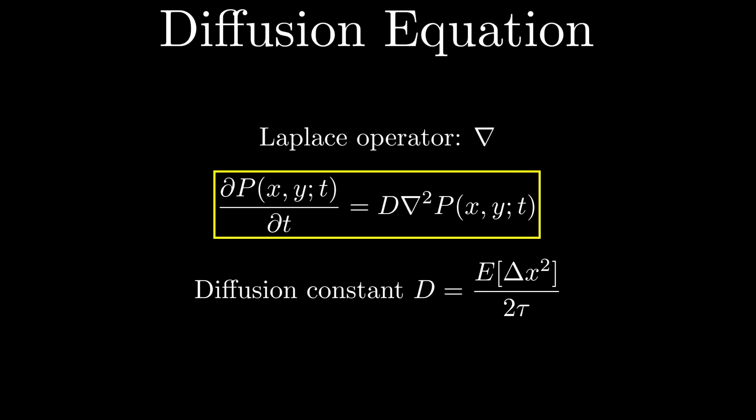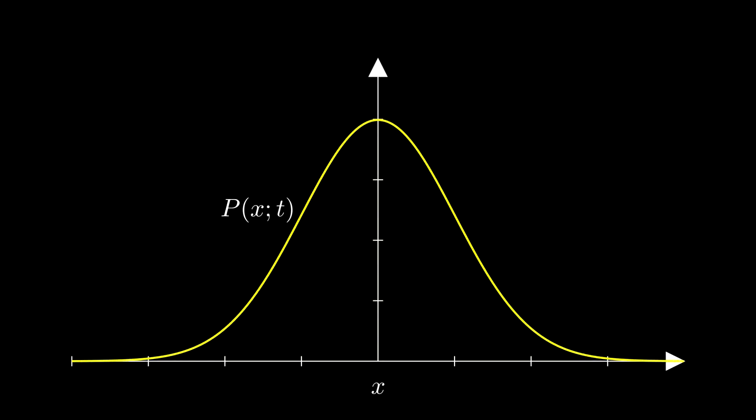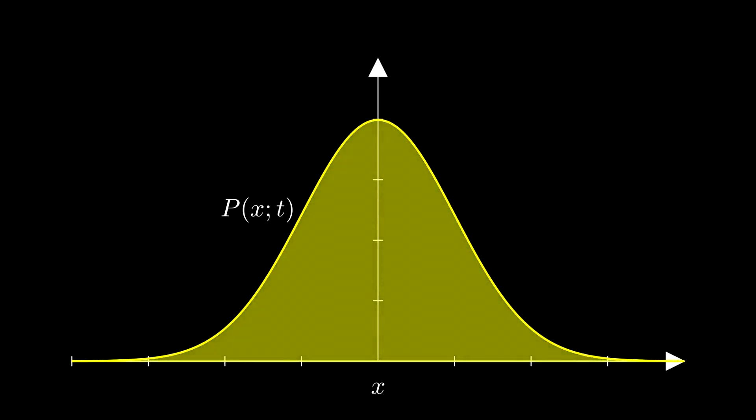This equation is known as the diffusion equation. The solution to the diffusion equation is the Gaussian distribution. This means that, as time progresses, the probability of finding the particle far from its starting point increases.